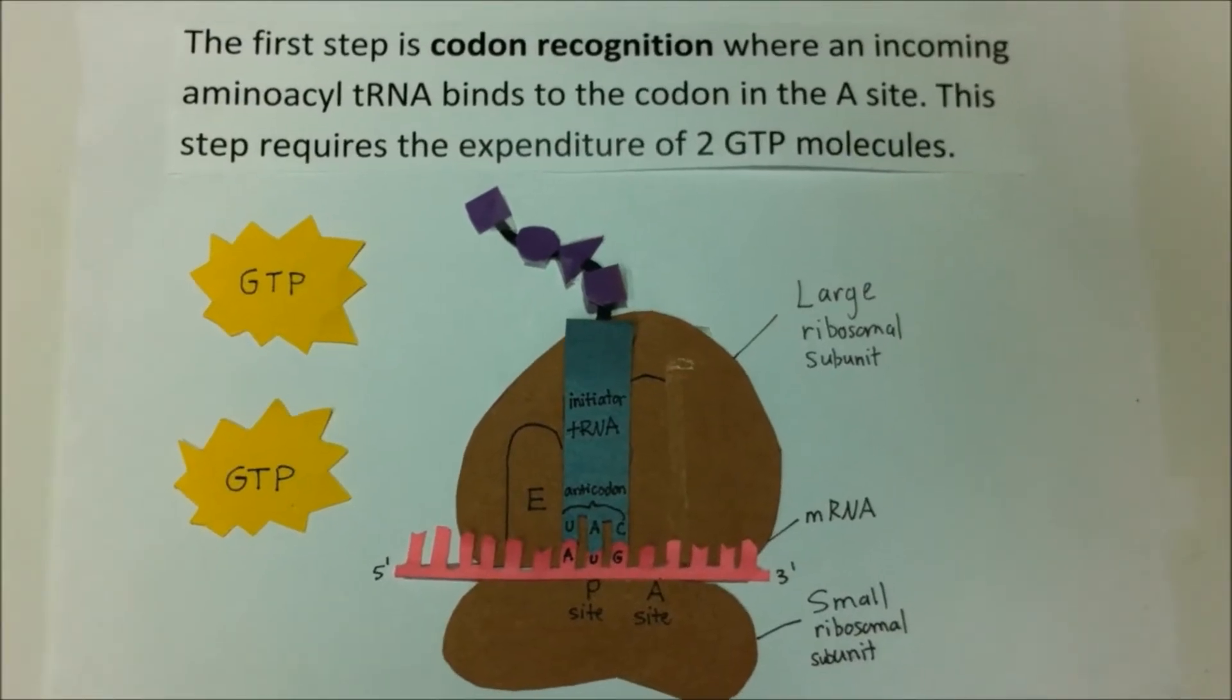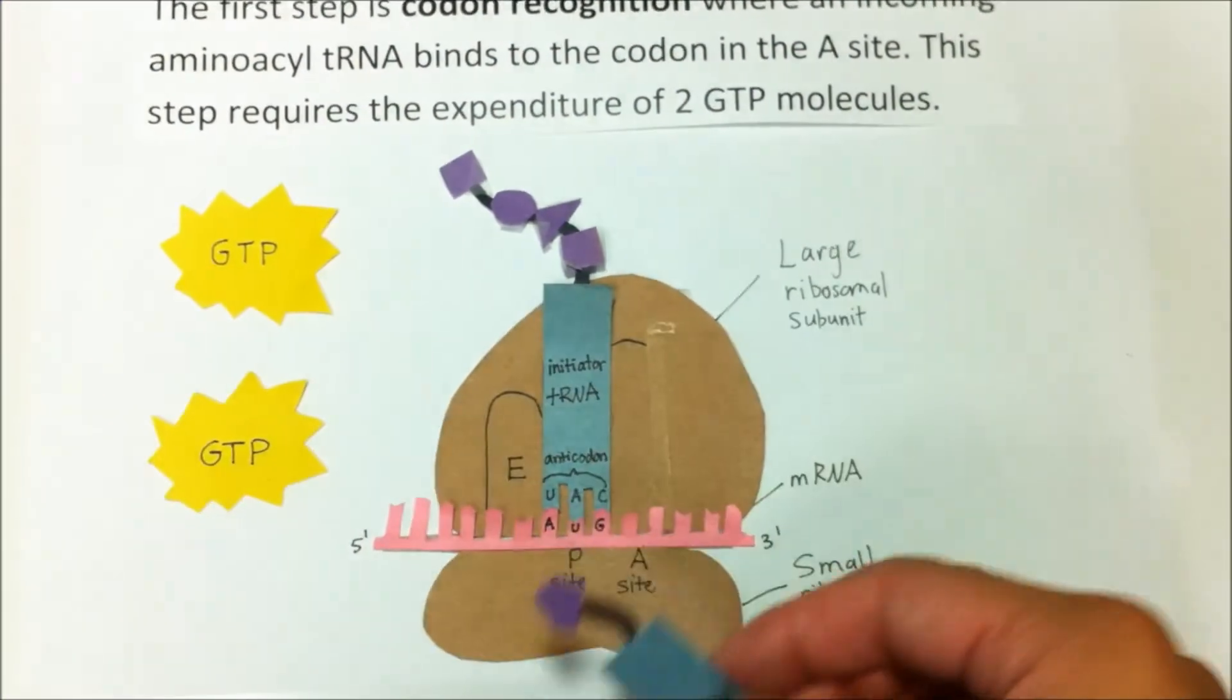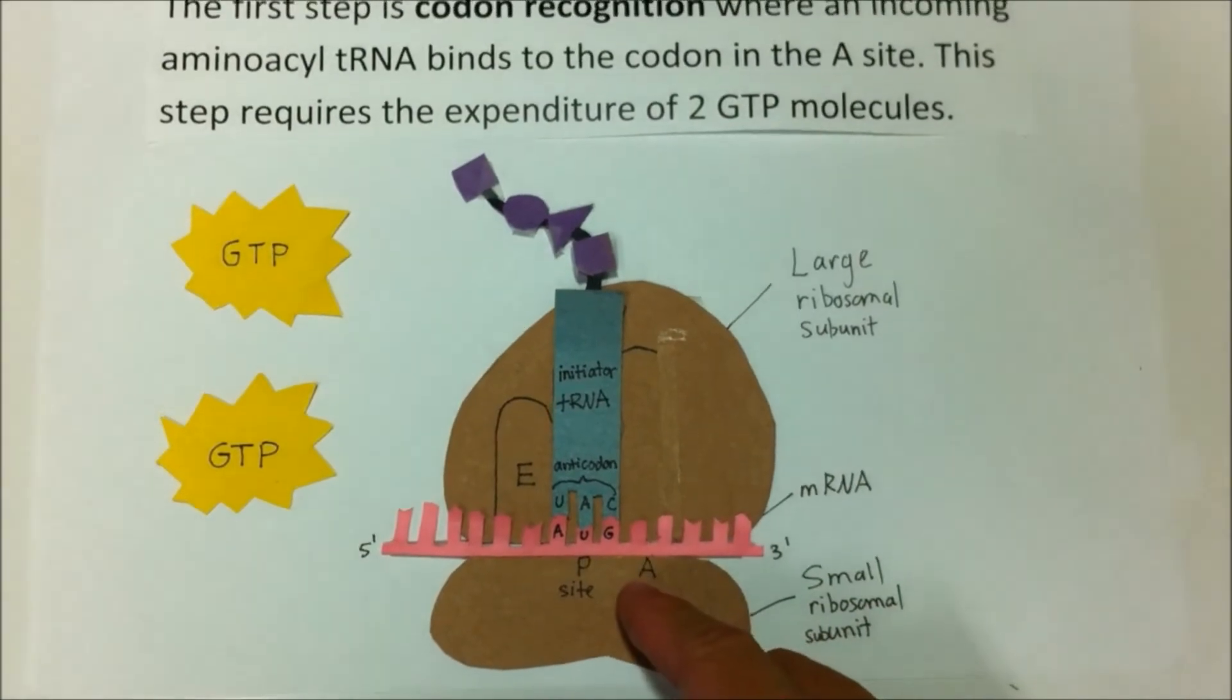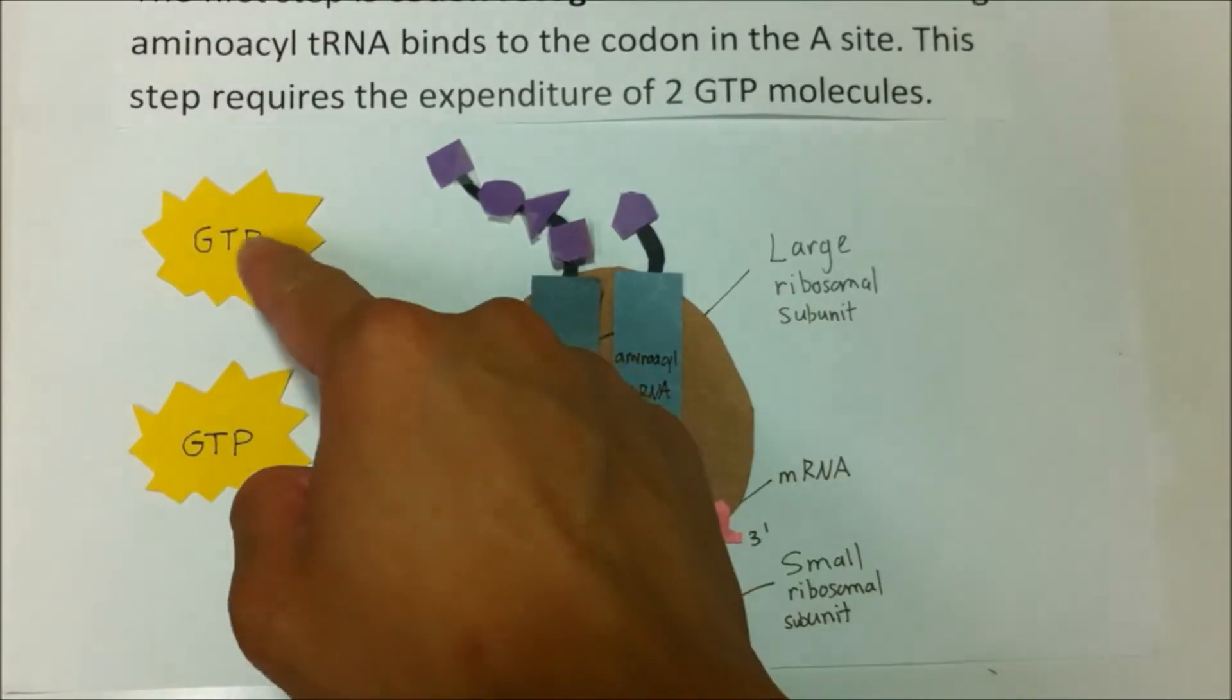The first step is codon recognition, where an incoming amino acid tRNA binds to the codon in the A site. This requires the expenditure of two GTP molecules.